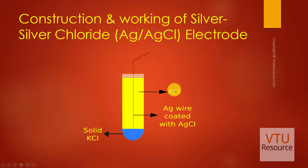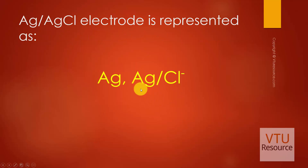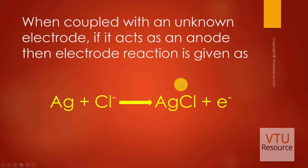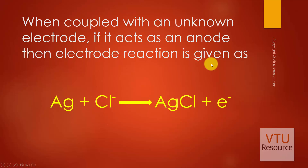The Ag/AgCl electrode can be represented as Ag | AgCl | Cl⁻. It can act both as an anode as well as a cathode, depending upon the electrode with which it is coupled. If the Ag/AgCl electrode acts as an anode, the electrode reaction is: Ag + Cl⁻ → AgCl + e⁻.